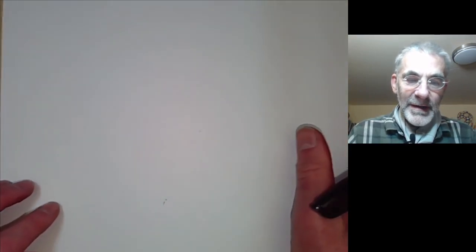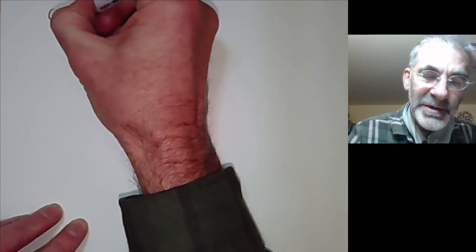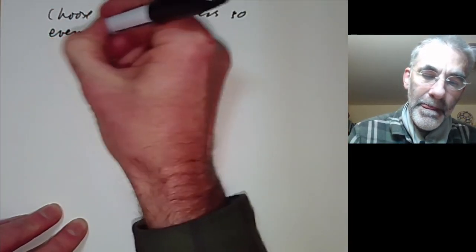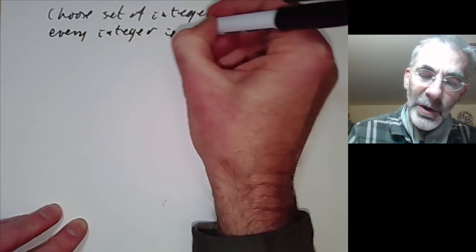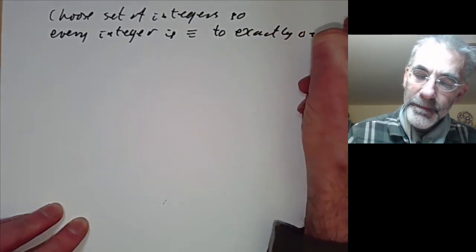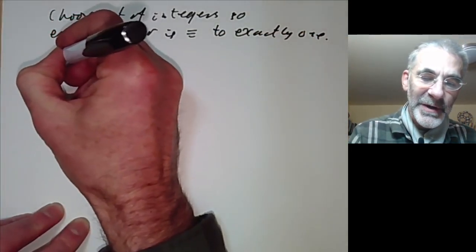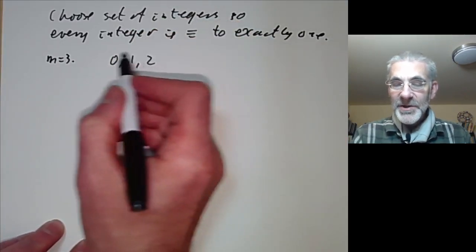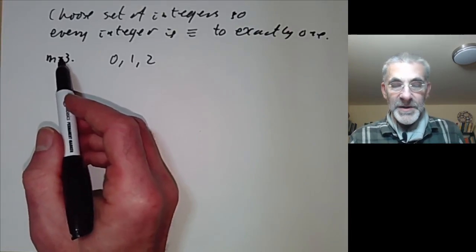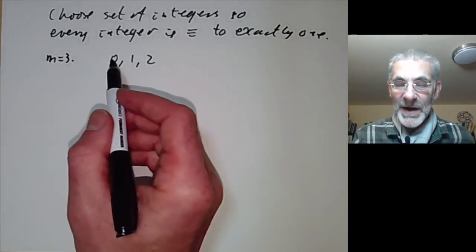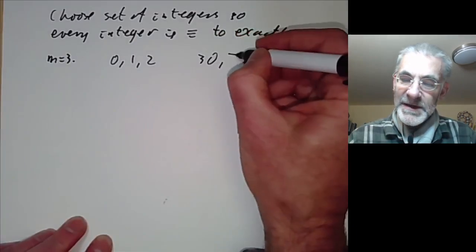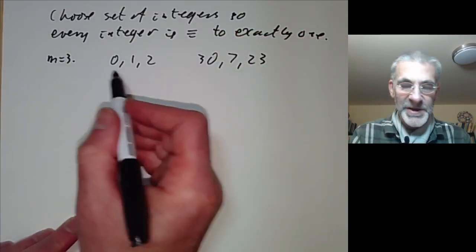We can choose a set of integers so that every integer is congruent to exactly one of them. For example, taking m equals 3, we can choose the integers 0, 1, and 2, because every integer is congruent to one of these. So we can think of the integers modulo 3 as a set with three elements. Of course we don't have to choose 0, 1, and 2 — we could choose 37 and 23 — but that would be rather stupid.